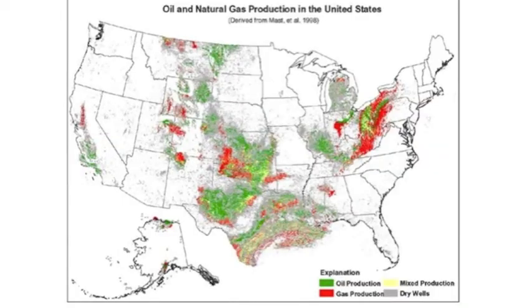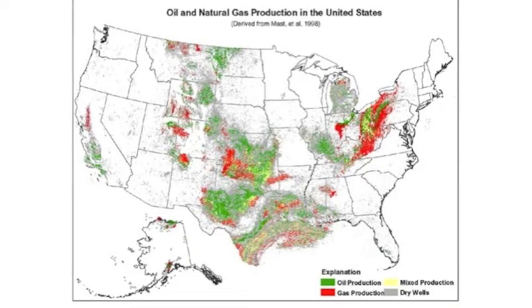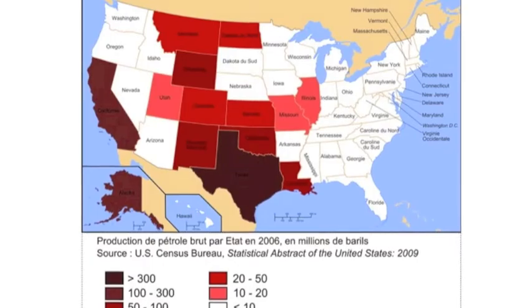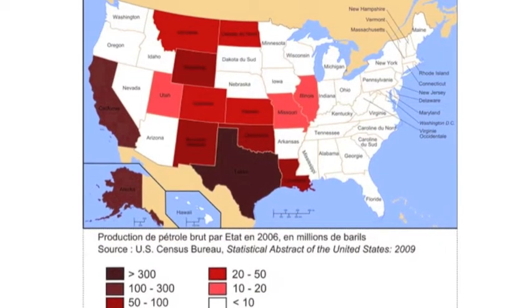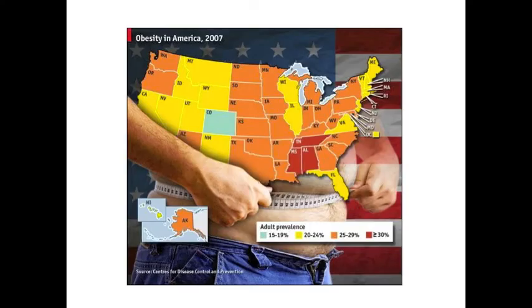A quantitative map, on the other hand, shows the how much of something, not just the where. So instead of a qualitative map that may show the distribution of U.S. parks, a quantitative map might show the number of park visitors. Or whereas a qualitative thematic map might show the distribution of oil and natural gas production in the U.S., a quantitative thematic map might show the number of barrels of oil extracted throughout the U.S. Quantitative maps are always going to include numerical data.